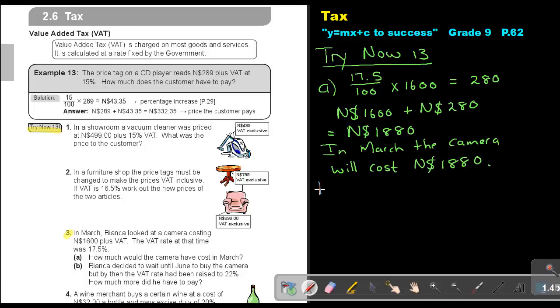Then number B. Bianca decided to wait until June to buy the camera. By then, the VAT rate had been raised to 22%. How much more did she have to pay?